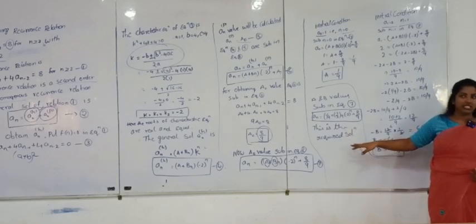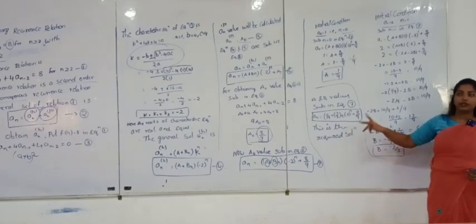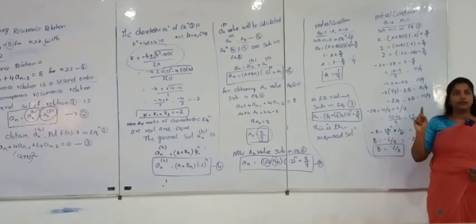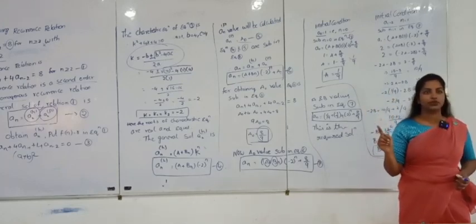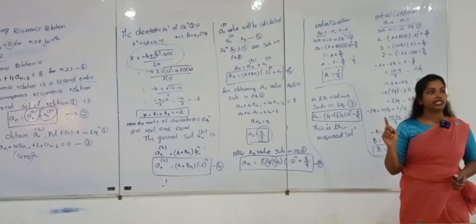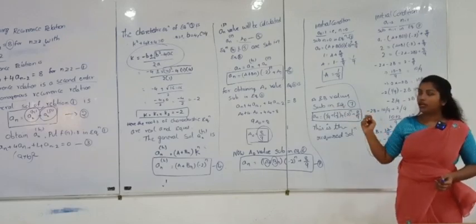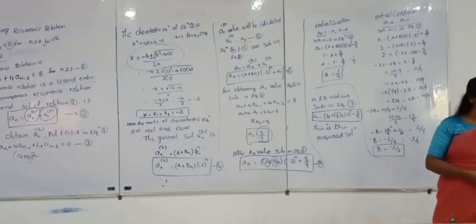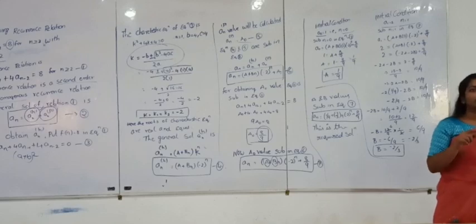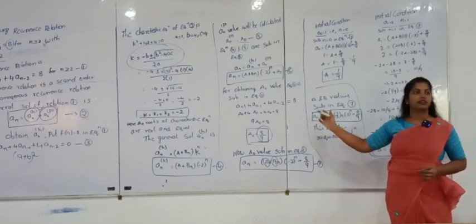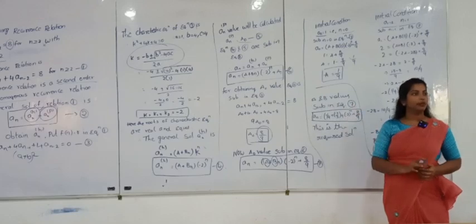This is the method for solving a non-homogeneous recurrence relation. There are two types of questions: first order and second order only. The format is: first, choose homogeneous or non-homogeneous; next, choose first order or second order; then write the formula; find the k value; find A_n^h; find A_n^p (the particular solution, finding A₀); then substitute initial conditions to find A and B values.